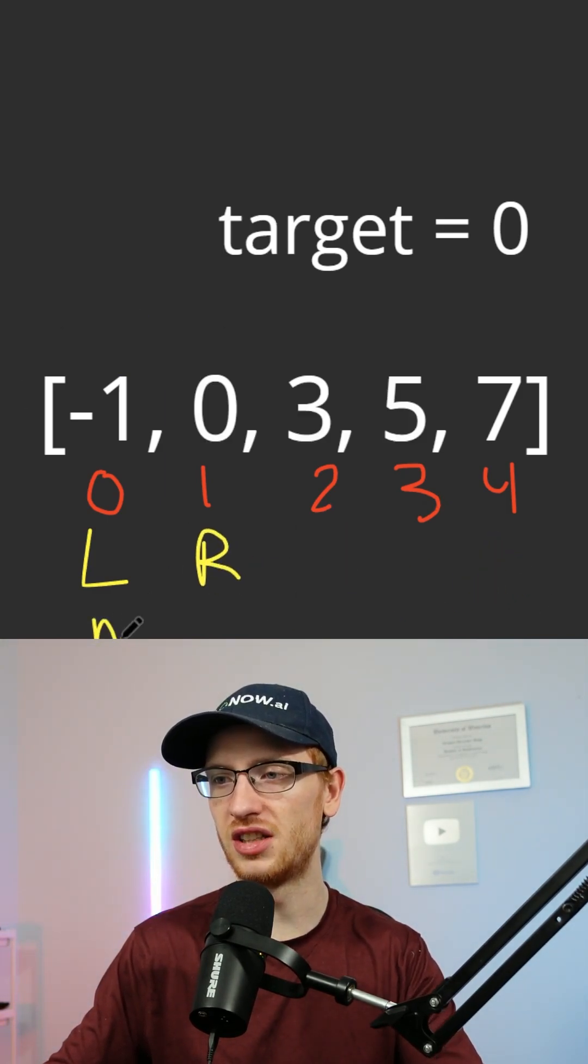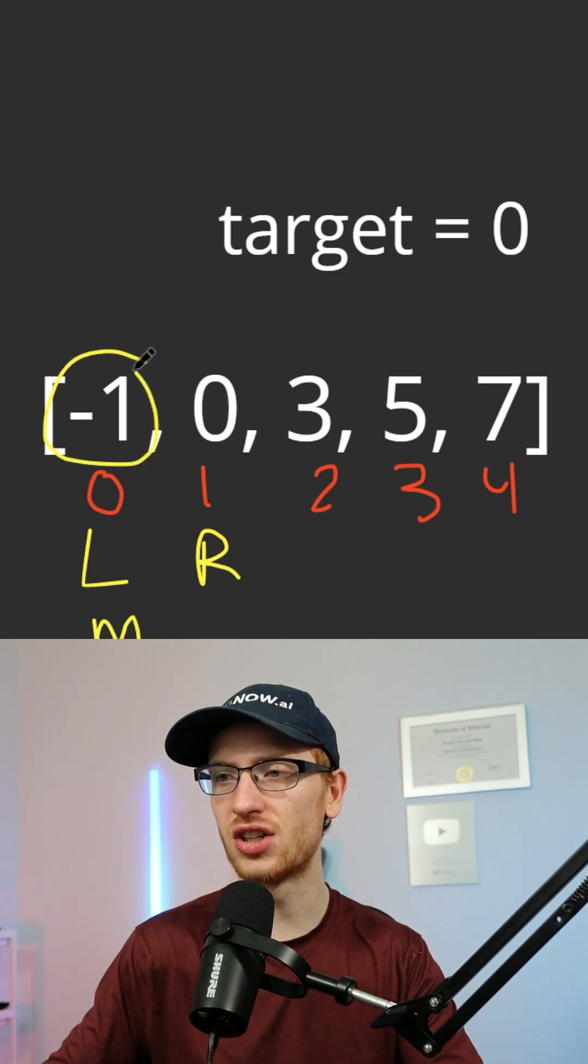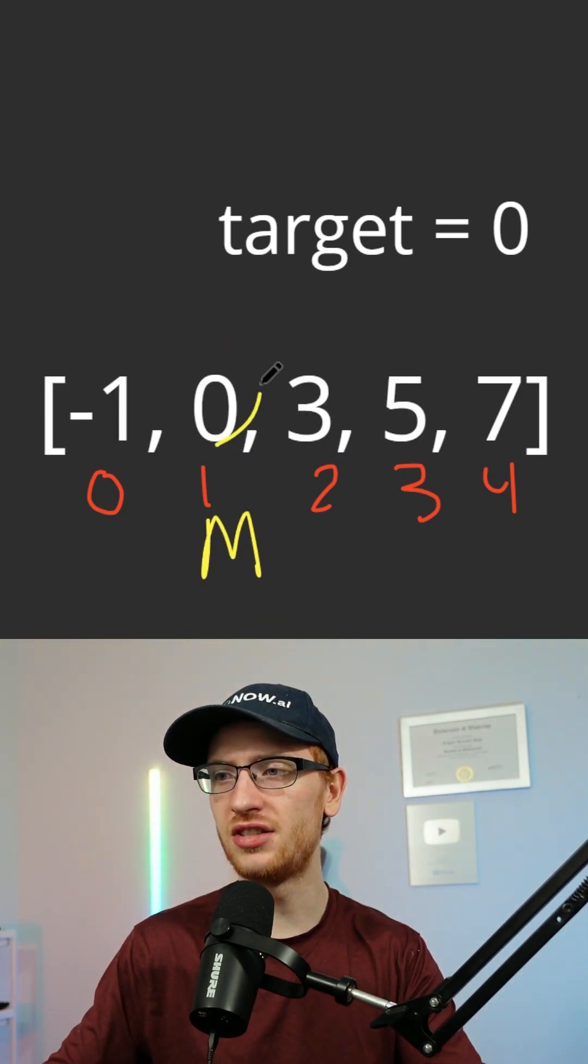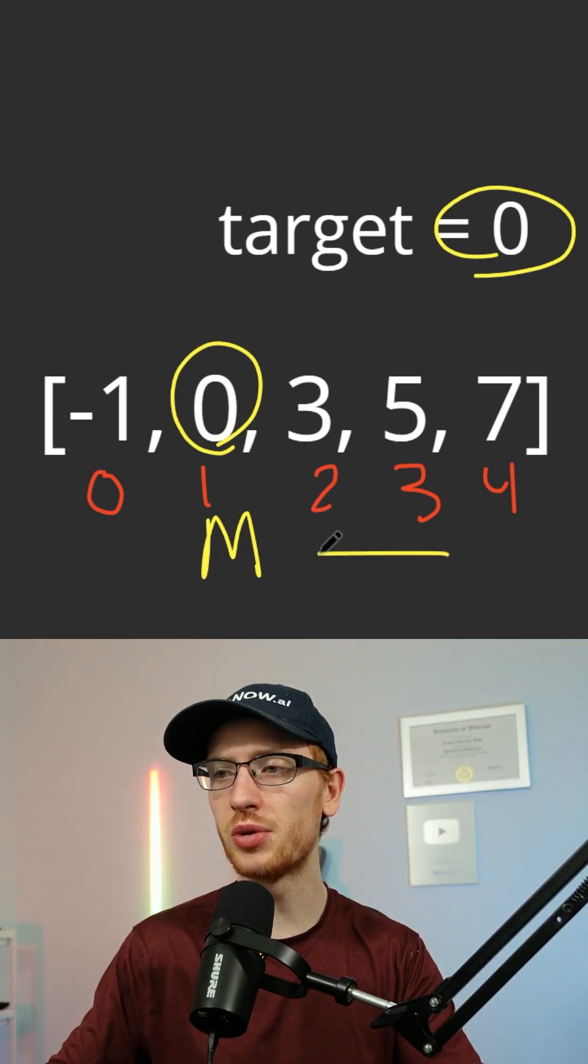We would get our m now as this value and we'd see is this the target? No it's not, this value is too small. So we set l to be m plus 1 and on our last iteration we would see that the array at m is equal to our target. So we would return the index.